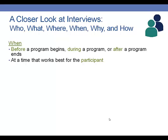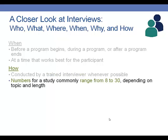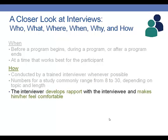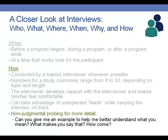Like a focus group, interviews can happen at any point in your program implementation or evaluation and should be conducted at a time that works best for the participant. Plan on practicing with interviews several times before you feel comfortable and trained enough to be successful. Studies have shown that the right number of interviews to draw conclusions ranges from as few as 8 to as many as 30, depending on the information you're gathering and the length of your interviews. It's important to develop a rapport with your interviewee, make them feel comfortable, take advantage of unexpected leads, and be non-judgmental when asking for details.